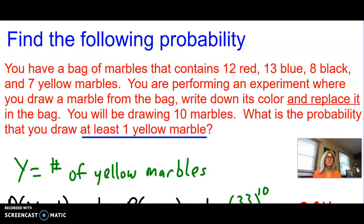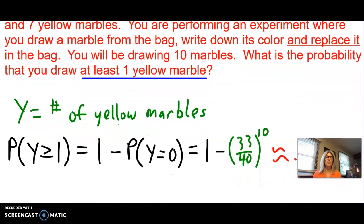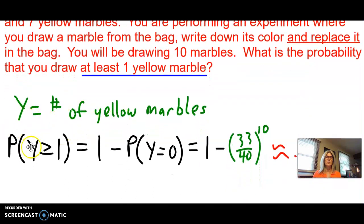Let's practice this. Take a look at it. We're going to name Y the event as the number of yellow marbles. So the probability of getting at least 1 yellow marble, that's more than or equal to 1, would be the complement of getting no yellow marbles: 1 minus the probability of no yellow marbles.